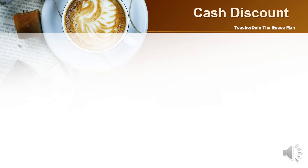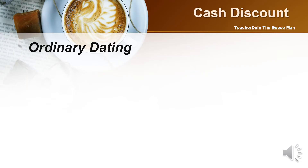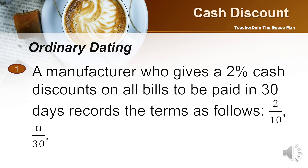Generally, there are three types of cash discounts. The first one is ordinary dating. It is the most commonly used method whereby payment terms are based on the invoice date. For example, a manufacturer who gives a 2% cash discount on all bills to be paid in 30 days records the terms as 2/10, N/30. This means a 2% cash discount is allowed if the bill is paid within 10 days from the invoice date, and the net amount is due within 30 days from the invoice date.